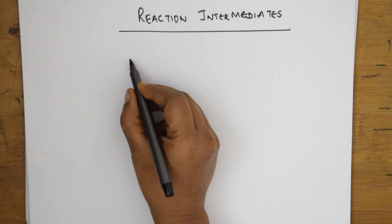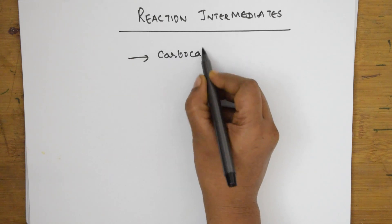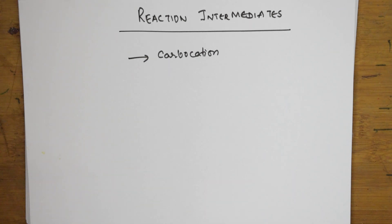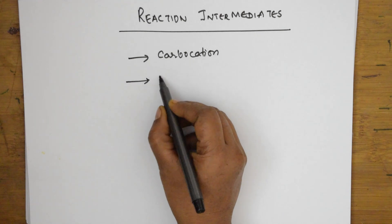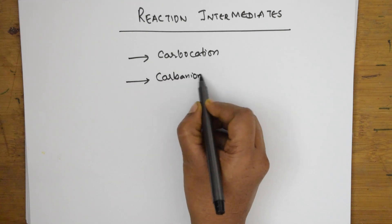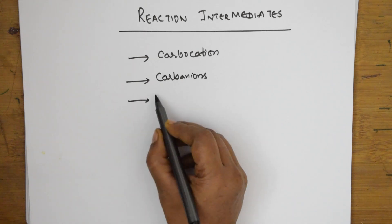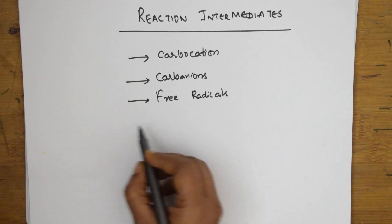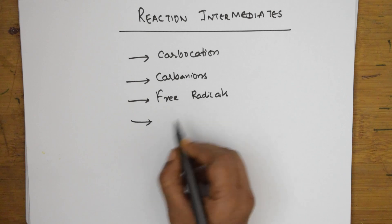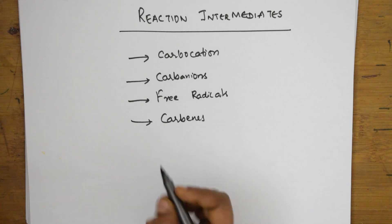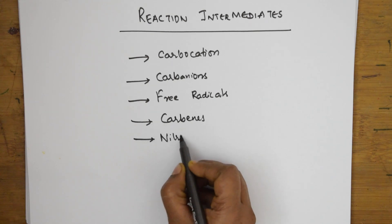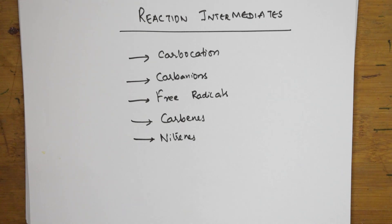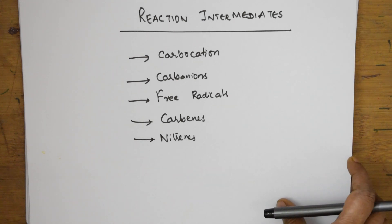What are these reaction intermediates? Let us list them out. We have a reaction intermediate called carbocation, denoted by a positive charge. We have one more class called carbanions, denoted by a negative charge. We have one more category called free radicals, denoted by a dot. After free radicals there is carbene, and after carbene there is one more category called nitrene. For all of these we'll be studying the preparations, structures, and in which name reactions these are formed.